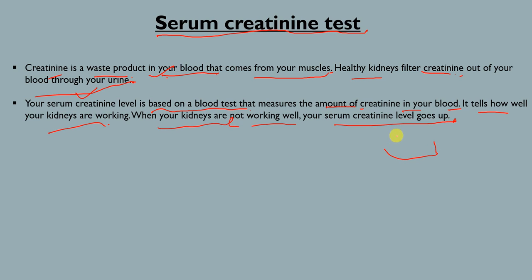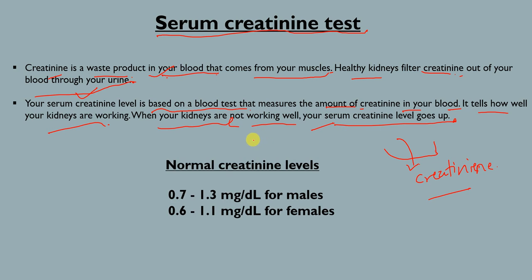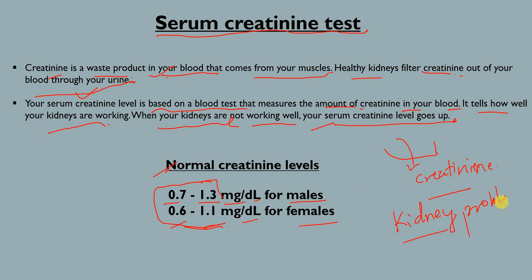If the kidneys are functioning properly, they can filter creatinine — a waste product — from the blood. But if they are not functioning properly, creatinine will not be filtered well, and the level of creatinine in the serum will be higher. A higher serum creatinine level indicates a kidney problem. Normal creatinine levels are 0.7 to 1.3 mg/dL for males and 0.6 to 1.1 mg/dL for females. Levels higher than these values indicate a kidney problem.